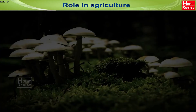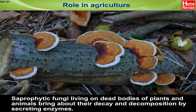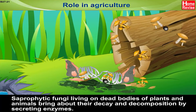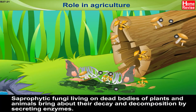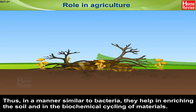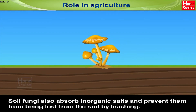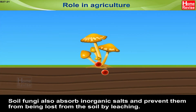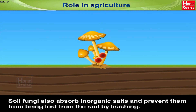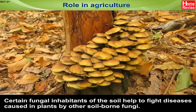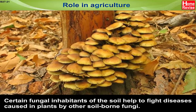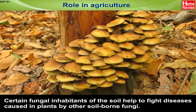Role in agriculture — saprophytic fungi: saprophytic fungi live on dead bodies of plants and animals, bringing about their decay and decomposition by secreting enzymes. Thus, in a manner similar to bacteria, they help in enriching the soil and in the biochemical cycling of materials. Soil fungi also absorb inorganic salts and prevent them from being lost from the soil by leaching. Certain fungal inhabitants of the soil also help to fight diseases caused in plants by other soil-borne fungi.